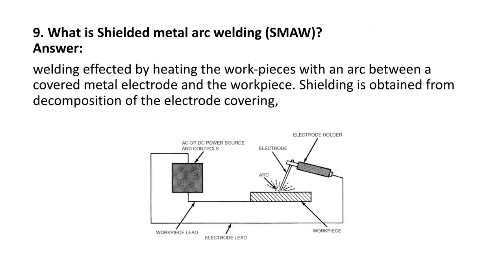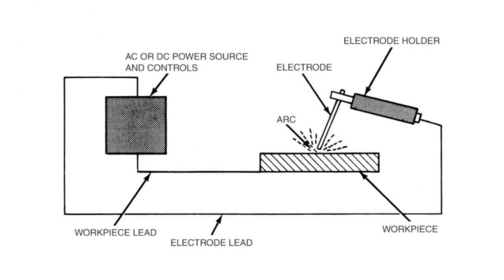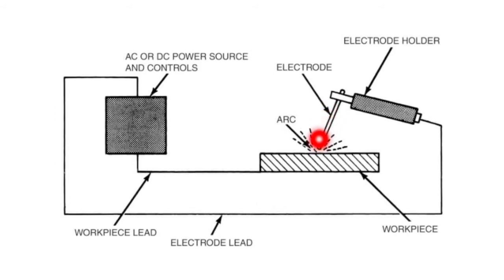Next question: what is shielded metal arc welding, or SMAW? The SMAW process is also known as stick welding. Welding is effected by heating the workpiece with an arc between a covered metal electrode and the workpiece. Shielding is obtained from the decomposition of the electrode covering. The arc is generated between the electrode and workpiece. A flux-coated electrode is used, which disintegrates during welding and provides shielding.